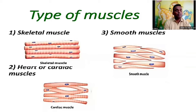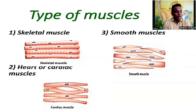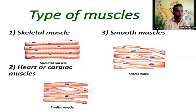The heart is made of cardiac muscles. The cardiac muscles cause the heart to relax and contract continuously at a rate of 70 times per minute — when you put your hand on your chest, you can feel the movement. Smooth muscles are present in internal organs such as the stomach, intestine, blood vessels, and uterus.